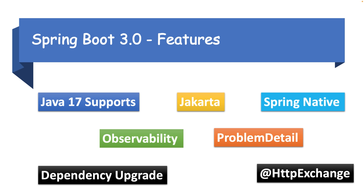Next is HTTP Exchange. You can have native support for a declarative HTTP client interface using the @HttpExchange annotation. For different HTTP methods the annotations differ: @GetExchange for GET, @PostExchange for POST. This is similar to the Feign client — the same way you consume an API using Feign client, you can design your declarative REST client using this annotation.